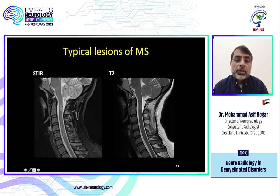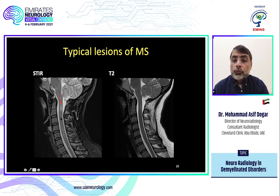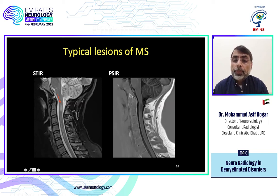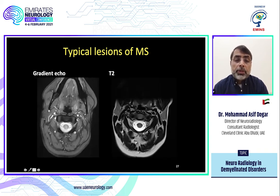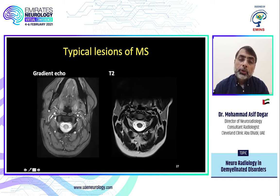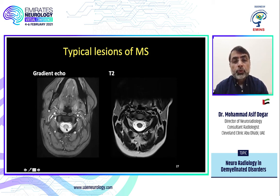In the spine, a lesion may be visible on STIR but not on T2 — we question whether it is real or an artifact. Using phase-sensitive inversion recovery, the lesion appears hypointense, confirming it is real. Also, lesions on axial images are better seen on gradient echo than T2. Whenever doing MS cases, make sure you have gradient echo imaging in the cervical spine.